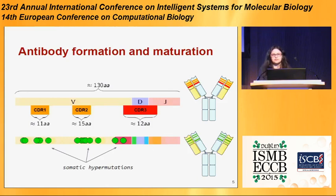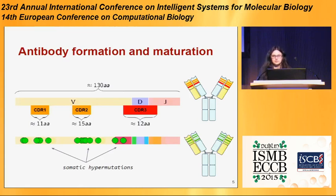After successful binding of an antibody with antigens, the corresponding B cells grow up — they undergo clonal expansion and somatic hypermutation — which introduces mutations that change the immunoglobulin gene and thus improve affinity.